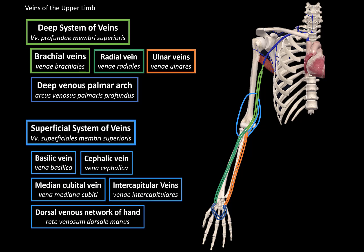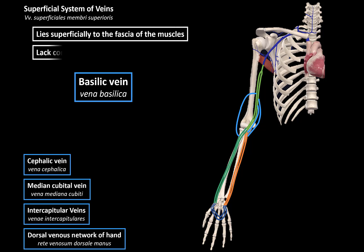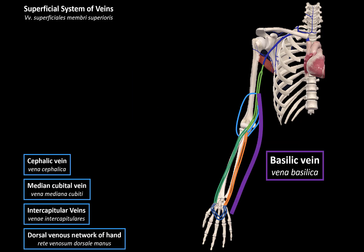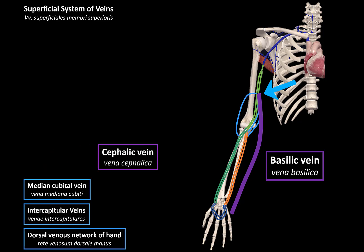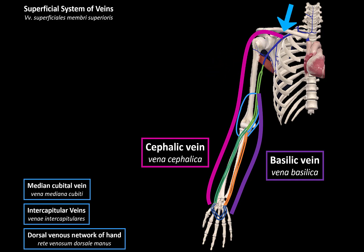Now let's go ahead and cover the superficial veins of the upper limb. The superficial system lies superficially to the fascia of the muscles and lacks corresponding arteries. The first one is the basilic vein. It arises at the dorsal venous network of the hand, courses on the medial side of the forearm, runs on the medial bicipital groove in the arm, and then joins the brachial veins. Then we have the cephalic vein, which also arises at the dorsal venous network of the hand, courses on the lateral side of the forearm, runs in the lateral bicipital groove in the arm, and then joins the axillary vein.